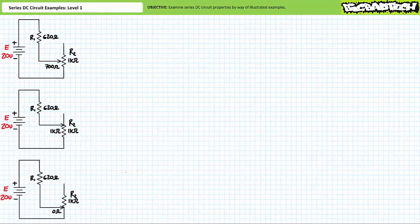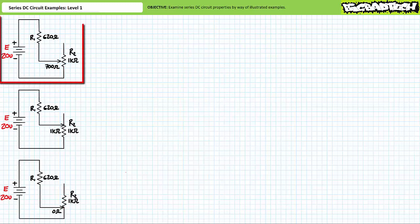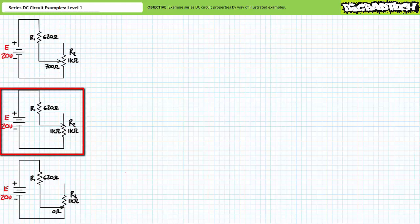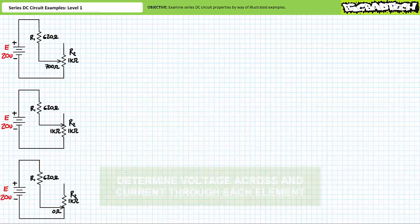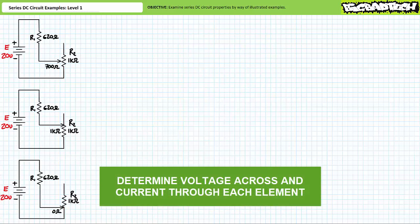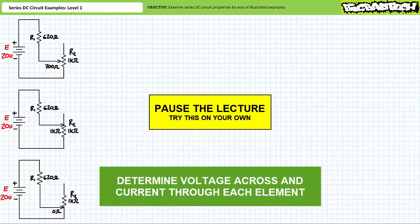Our next illustrated example problem features a 20 volt source in series with a 620 ohm resistor and a 1 kilo ohm potentiometer at three different settings: in the first circuit it's set to 700 ohms, in the second circuit it's set to a maximum 1 kilo ohm, and in the third circuit it's set to a minimum of 0 ohms. We're being asked to solve for the voltage drop across each element and the current through each element. By all means pause the lecture and try this on your own. If you're tracking, you should obtain the following results.